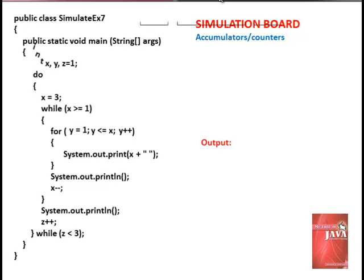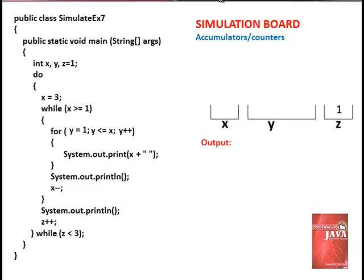First, we declare variables x, y, and z. Z has an initial value set to 1. The program proceeds entering a do-while loop. Immediately, the loop executes assigning 3 to variable x.